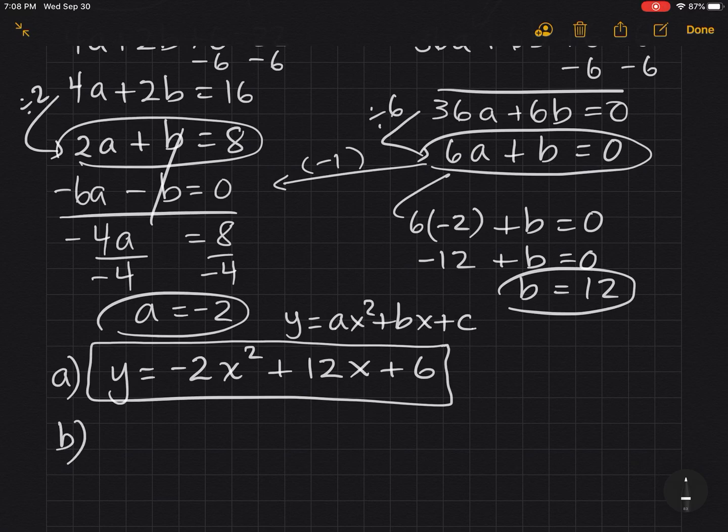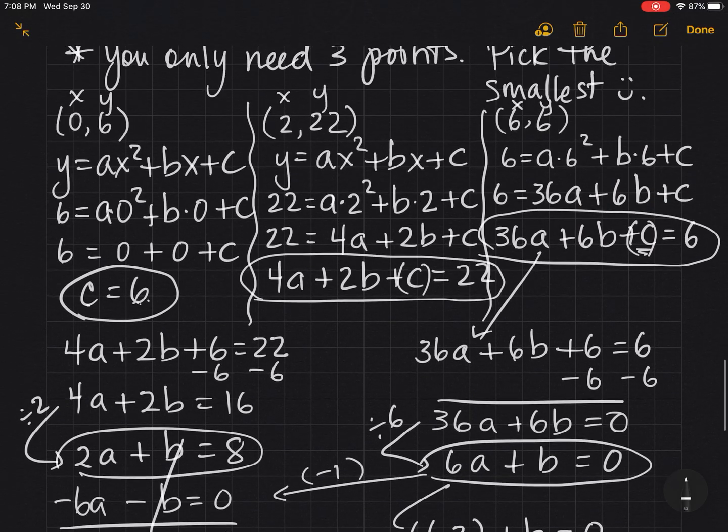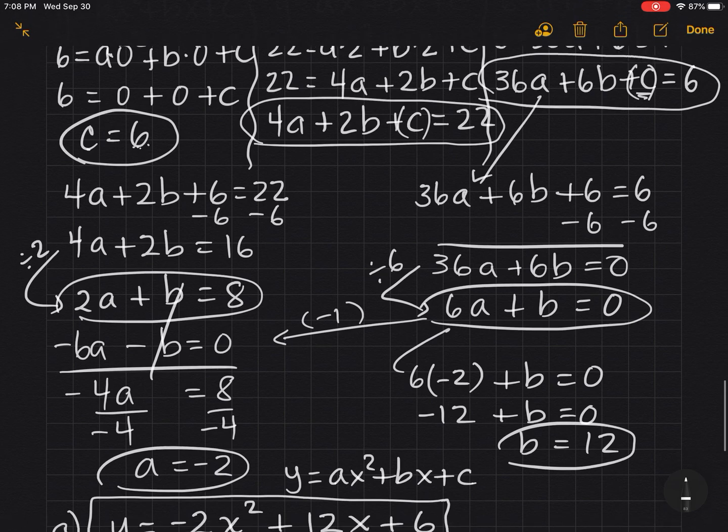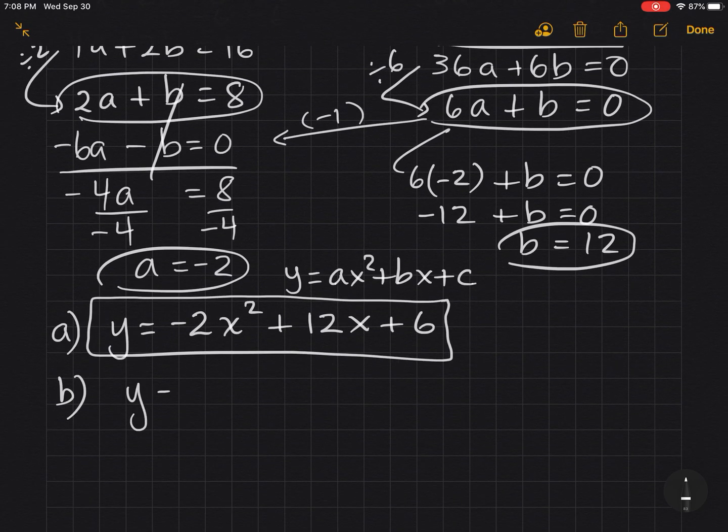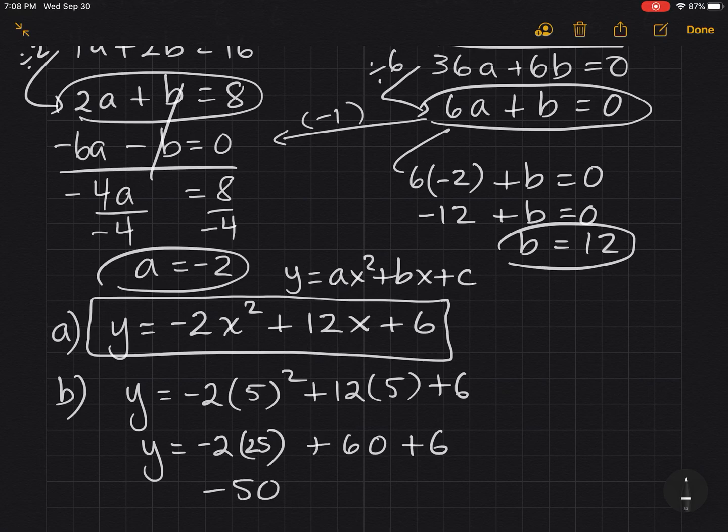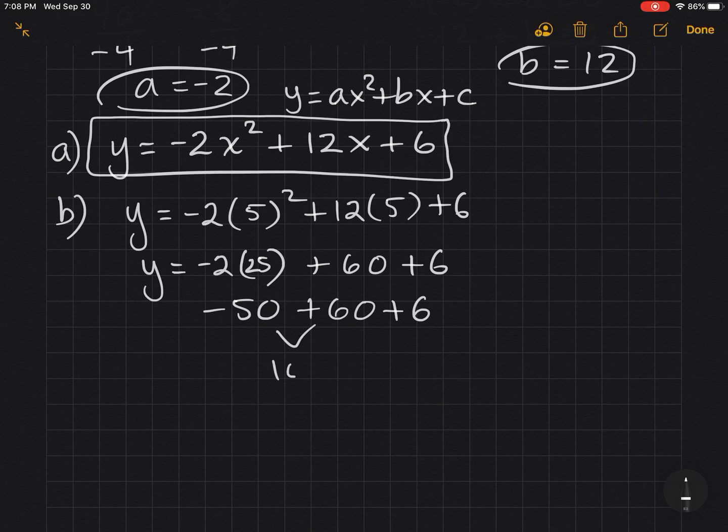Lastly, part b says what's the height of the ball after 5 seconds? Well, if we go all the way back up, we'll see that y is for height and x is for seconds. So I'm going to plug in 5 for x. So y = -2(5²) + 12(5) + 6. And y = -2(25), got ahead of myself, plus 60 plus 6. Plus 6 is -50 + 60 + 6.